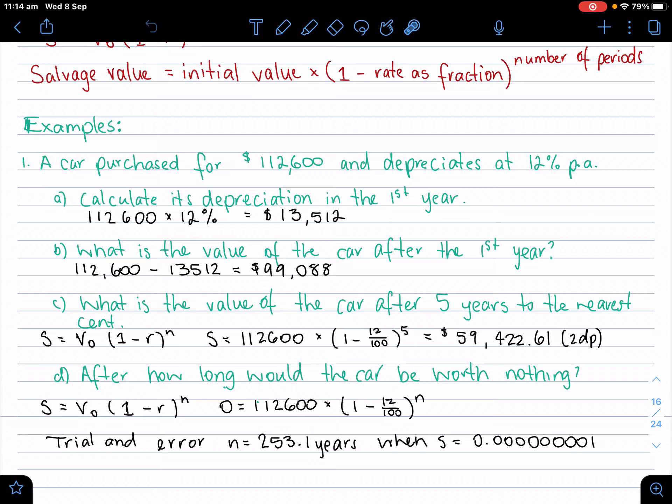Part D is a little bit trickier. It says, after how long would the car be worth nothing? So now we have N is our unknown. We know everything except N because the salvage value has to be zero when the car is worth nothing. We know the initial value and we know the rate. Now, there is another way mathematically to do this, but in the standard maths course, and up to where you guys are up, you're going to have to use trial and error. So you're going to have to put different values for N in and see when you get the answer for zero here in the calculator.